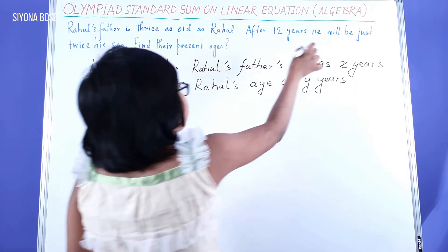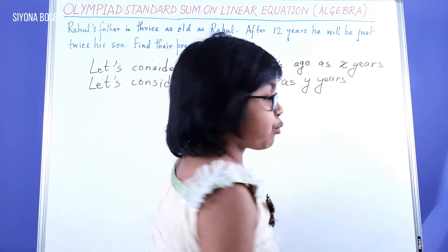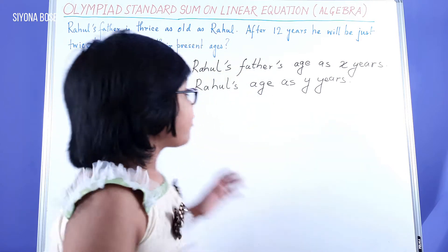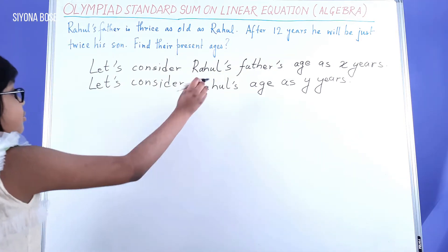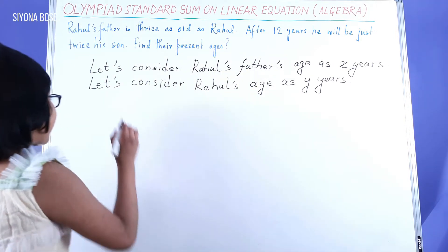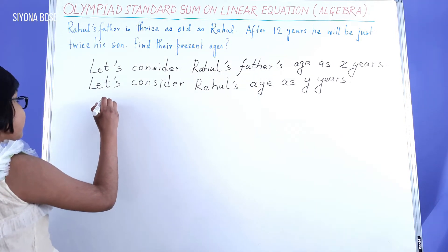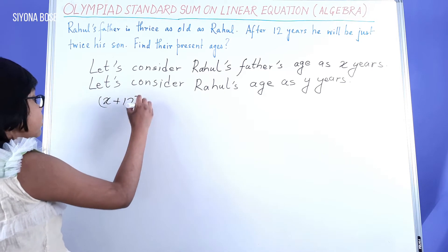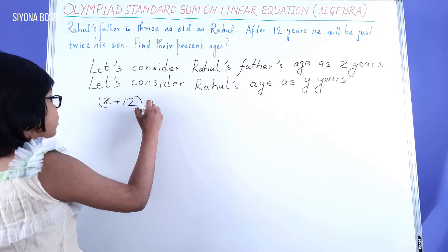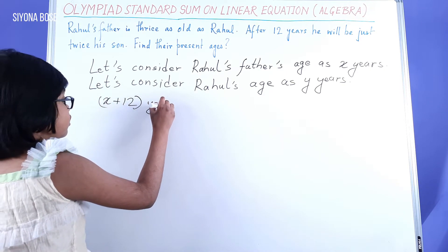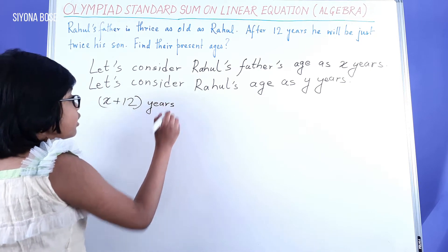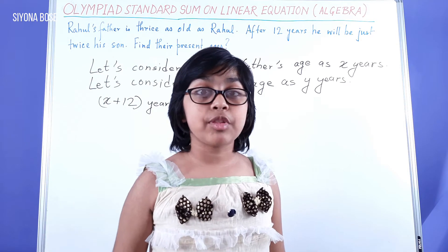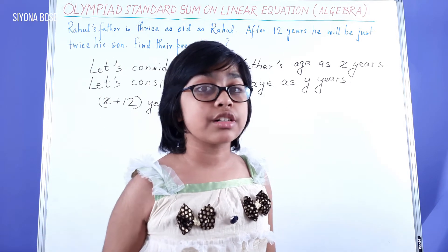Now, after 12 years, what's going to happen? After 12 years, Rahul's father's age would be X plus 12 years, and Rahul's age would be Y plus 12 years.